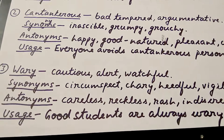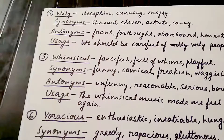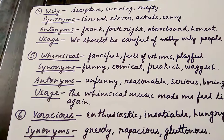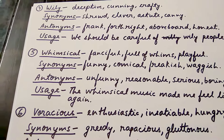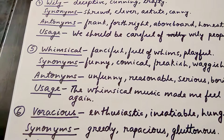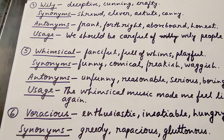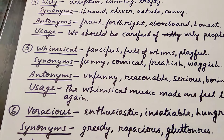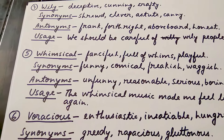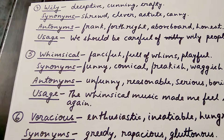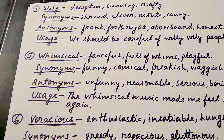The next word is 'wily', which means deceptive, cunning, or crafty. Its synonyms are 'shrewd', 'clever', and 'astute'. Its antonyms are 'frank', 'forthright', 'above board', and 'honest'. Usage: 'We should be careful of wily people' — we should stay away from and be cautious of people who are wily. The trick: relate the word to 'Billy' — Billy types tend to be quite cunning.